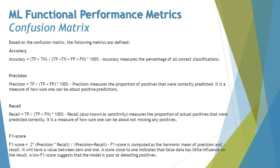Precision and recall can be combined to get the F1 Score, measured as 2 × (Precision × Recall) / (Precision + Recall). The F1 Score is the final measure computed as the harmonic mean of precision and recall. It has a value between 0 and 1 — a score close to 1 indicates false data has little influence on the result, while a low F1 Score close to 0 suggests the model is poor at detecting positives.